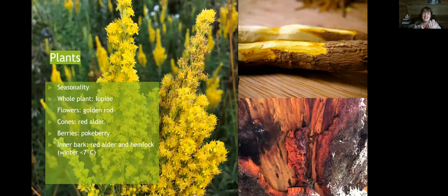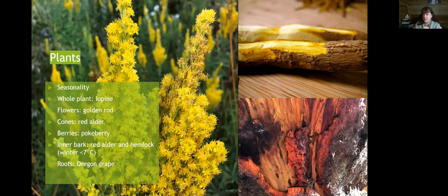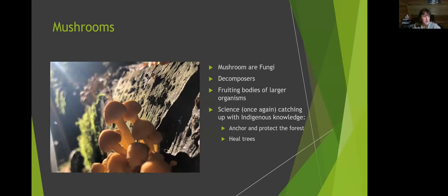Be conscious of harvesting bark in a way that doesn't affect or hurt the tree. Oregon grape root — a local shrub — when you peel it you'll get that luminous yellow dye inside. There are also bulbs like onions and bulrush that can give you color.